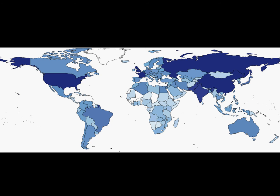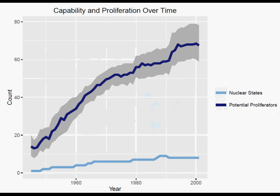Another interesting thing is the difference between countries with high latent capacity and those that have actually developed nuclear weapons. The darker purplish line shows the number of countries that could potentially develop a nuclear weapon if they tried hard enough; the light blue line shows countries that actually have nuclear weapons in any given year. In the earlier part of the timeframe there was a small discrepancy, but it has ballooned past 2000 into a very large gap. These three mechanisms—the threat of preventive war, the cost of developing weapons, and the bribes available instead of developing—help account for that difference.